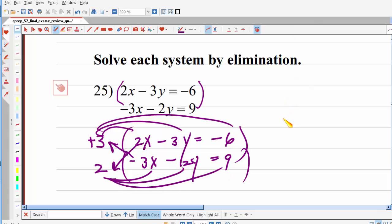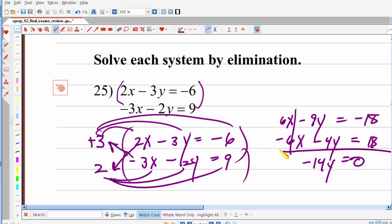So I get 6x minus 9y equals negative 18, and I get negative 6x minus, let's see, this is 2y minus 4y equals 18. So I add those together. Those are going to drop out and I'm going to get negative 14y equals 0, and I'm going to divide by negative 14, and I get y equals 0.